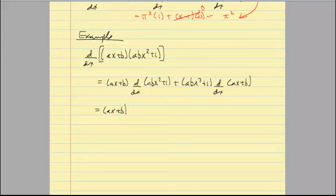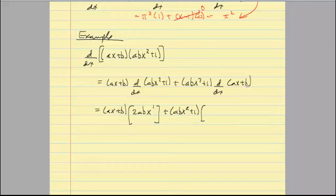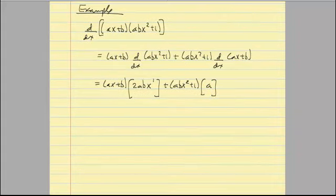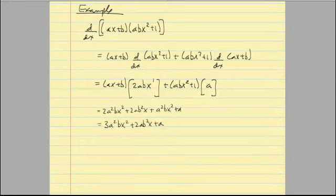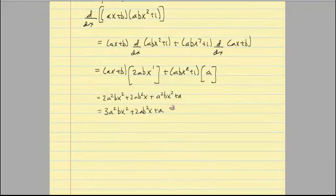X is my only variable; A and B are constants. Taking the derivative of ABX squared plus 1, I bring the 2 out front and decrease the exponent by 1, giving 2ABX; the derivative of 1 is 0. Plus the second function times the derivative of the first: the derivative of AX plus B — A is constant, so the derivative of AX is just A, and the derivative of B is 0. After distributing, simplifying, and combining like terms, I get the final derivative, which I can denote as F prime of X or Y prime.